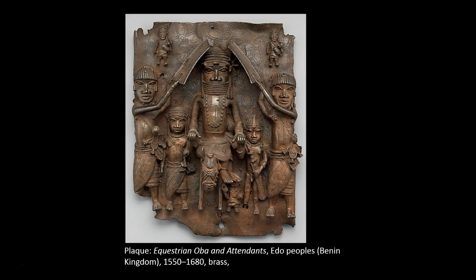The oba would have traveled with a large cohort of attendants, warriors, servants, diplomats, chieftains, and priests. The plaque originally hung alongside many others on posts throughout the palace of the oba. The order of their placement on the post would have told the story of the royal lineage of Benin's obas, who traced their dynasty all the way back to Oranmian, whose son was the first oba of Benin.